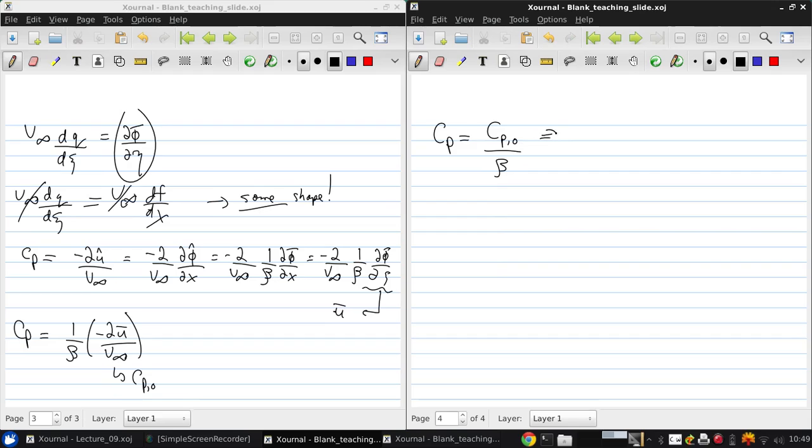So this really says then that cp for the compressible flow is cp0 over beta. And if we go back and use our definition of beta, we get that cp is cp0 over the square root of 1 minus m infinity squared. So this is what's called the Prandtl-Glauert rule.